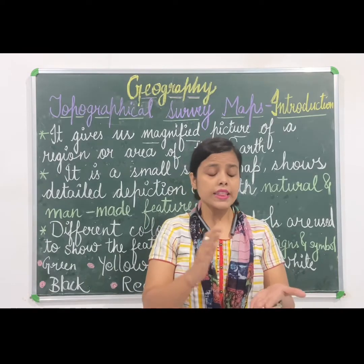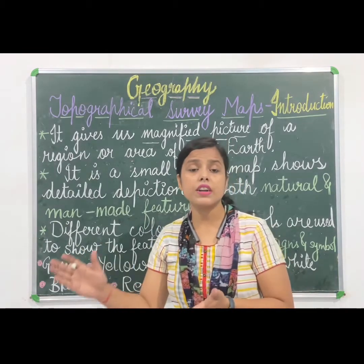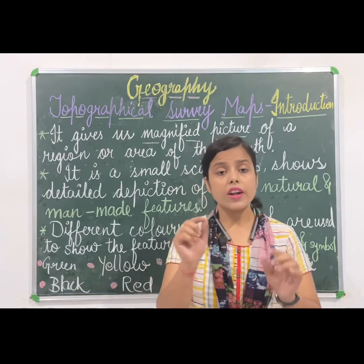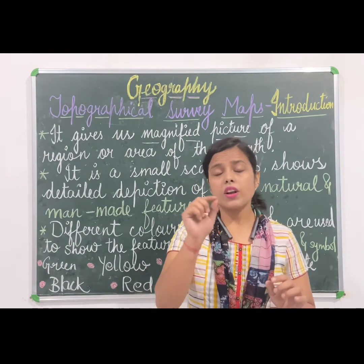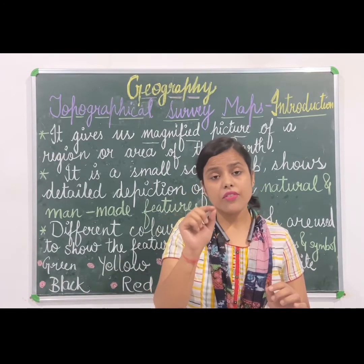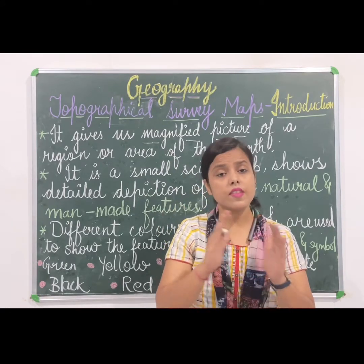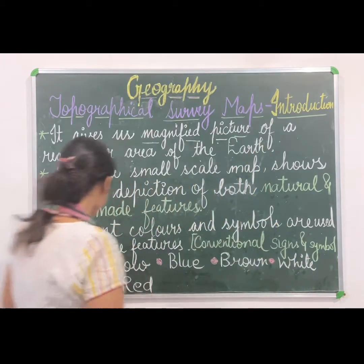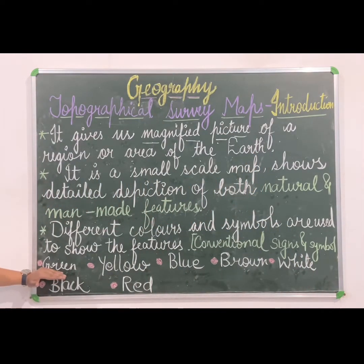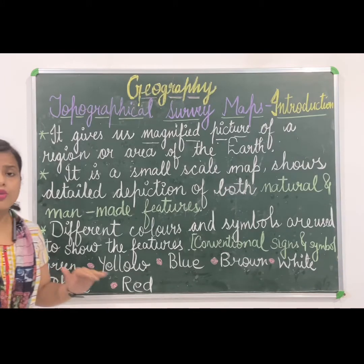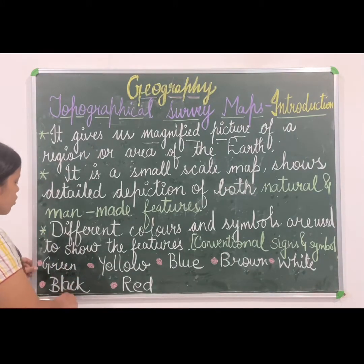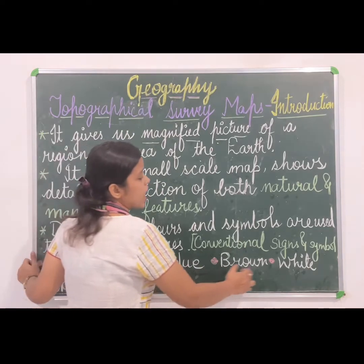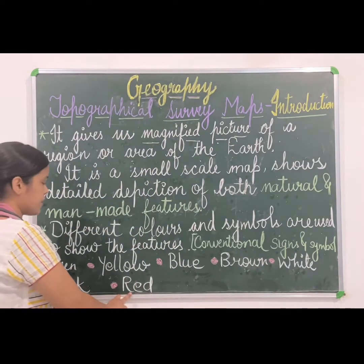It does not mean the colors or signs will be different for different maps or different places. Whatever the color or sign, the feature it indicates will be the same for all. As I have written here, the main colors used in a map are: green, yellow, blue, brown, white, black, and red.